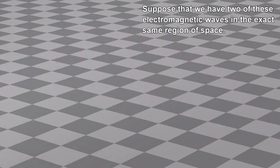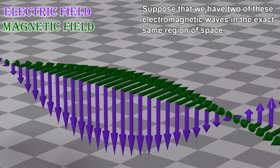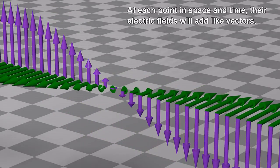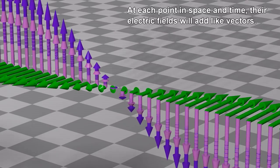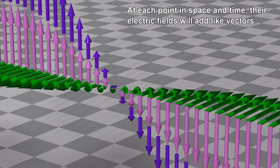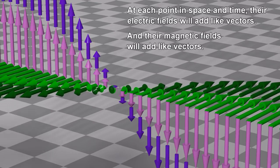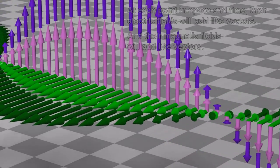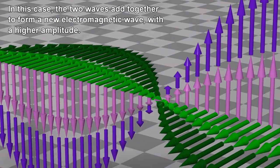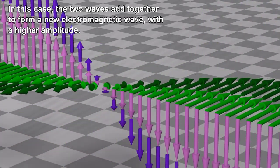Suppose that we have two of these electromagnetic waves in the exact same region of space. At each point in space and time, their electric fields will add like vectors, and their magnetic fields will add like vectors. In this case, the two waves add together to form a new electromagnetic wave with a higher amplitude.